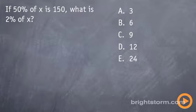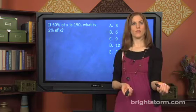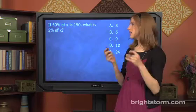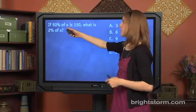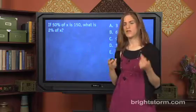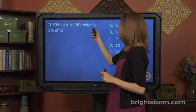Now this probably still sounds kind of confusing. So let's try it on a real problem. If 50% of X is 150, what is 2% of X? So you see we actually have a two part percent problem here. Let's take it piece by piece. First, we need to find 50% of X. First, we have to find what X is if 50% of X is 150. And next, we have to find out, what's 2% of X?